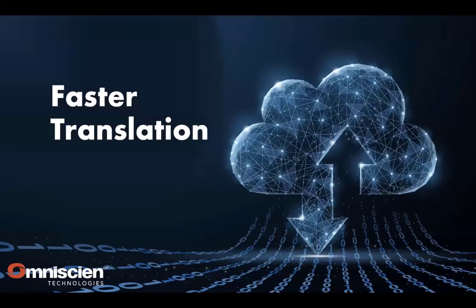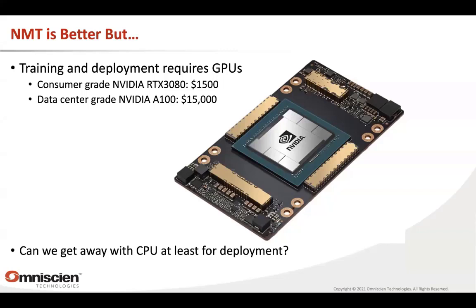Let's talk about faster translation. NMT has been established since about 2016-2017 as better than prior technologies, but it requires very specific hardware — GPUs. You can buy consumer-grade ones for around $1,000, but if you want to run this in a data center, NVIDIA charges much more. The NVIDIA A100, for instance, has a ticket price of $15,000 for a single GPU. That is a problem both for training and for deployment — having all this hardware in place for daily use is a huge expense. So the question is: can we get away with running on CPU?